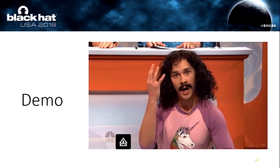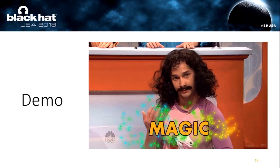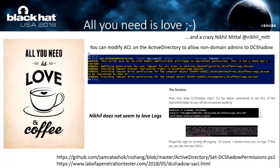Let's go back to the slide. There was a question: do you need domain admin to run DC Shadow? The answer is yes for the first time. But you can use some ACLs to give normal users the right to perform DC Shadow, so it can be done very easily. And thanks to NikkelMittal for this PowerShell script. But you can also use this to change the ACLs and remove some event logging, so it can be used to evade some detection.